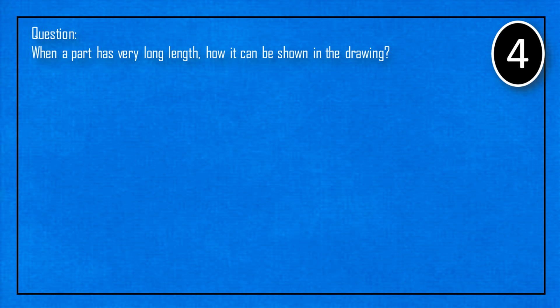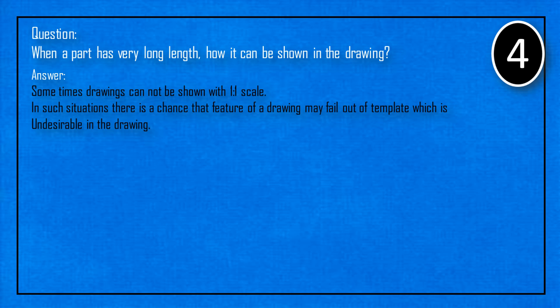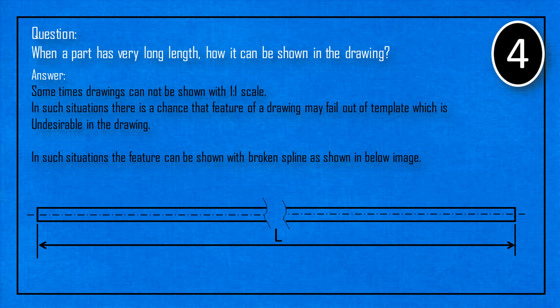When a part has very long length, how it can be shown in the drawing? Sometimes drawings cannot be shown with one to one scale. In such situations, there is a chance that feature of a drawing may fall out of template which is undesirable in the drawing. In such situations, the feature can be shown with broken spline as shown in below image.